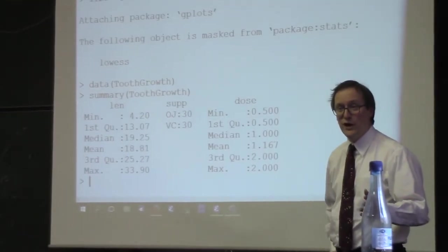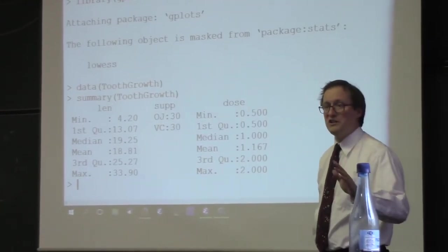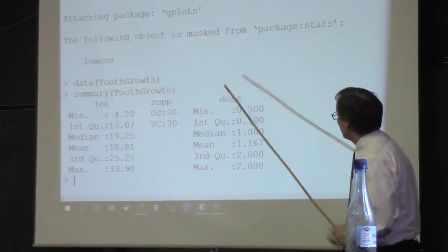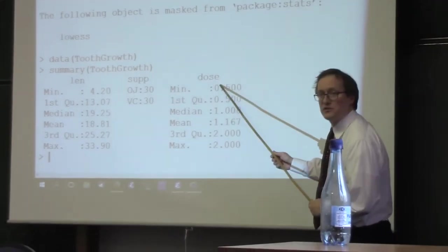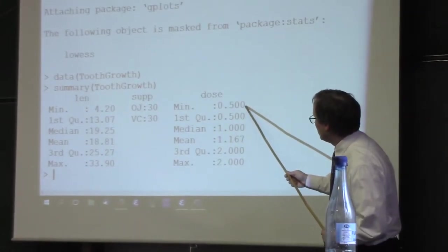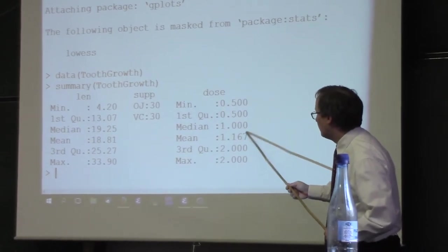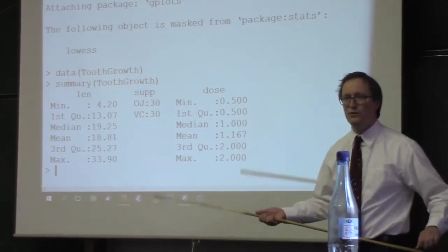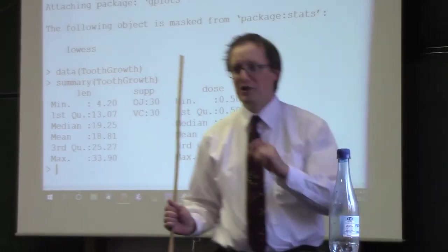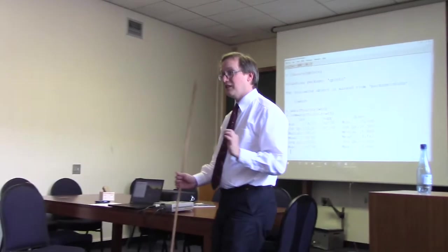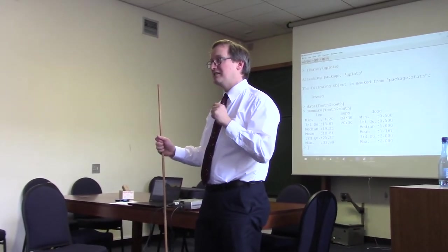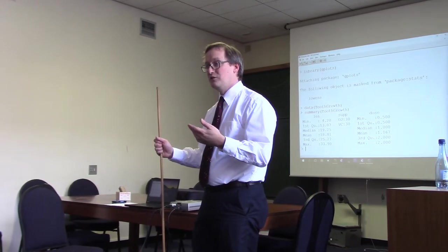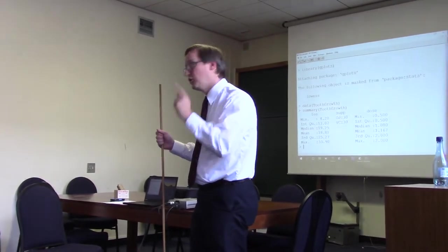We're really going to ignore this factor for now, so we don't need to think too much about that. However, we also have this field called dose. As you see, there's a minimum value of 0.5, a median value of 1, and a third quartile and maximum value of 2. So, we're going to transform these data from being a set of real numbers to transform this into a factor. And I'm going to show you why we can do that.